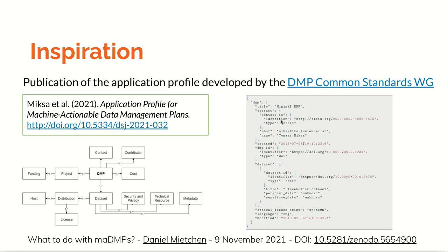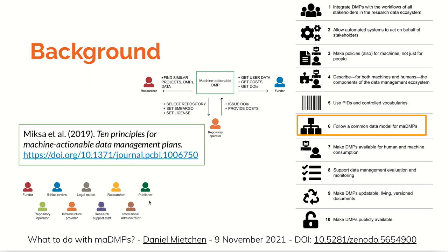You see here a minimal data management plan following that specification, and you also see here a data management plan in the context of the research in which it is taking place. Some background: earlier there were a number of principles that have been presented for machine actionable data management plans, and one of them was to follow a common data model, which is what the previous publication has achieved.